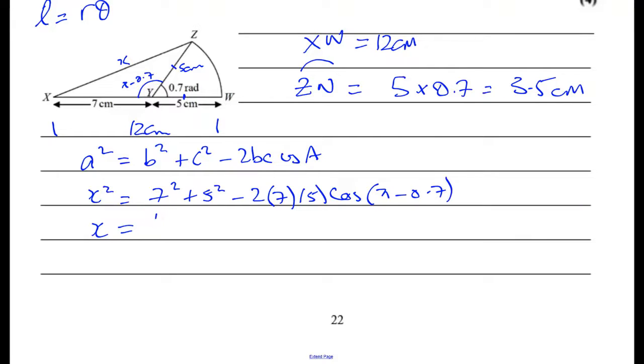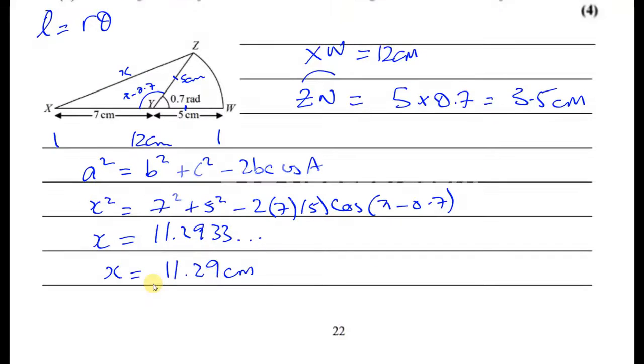11.2933... Let's see how they ask us to round it - give the answer to two decimal places. We found x, and x is our length XZ. XZ = 11.2933. I should leave it like this since it's not a final answer. Now we're going to add these three lengths together.